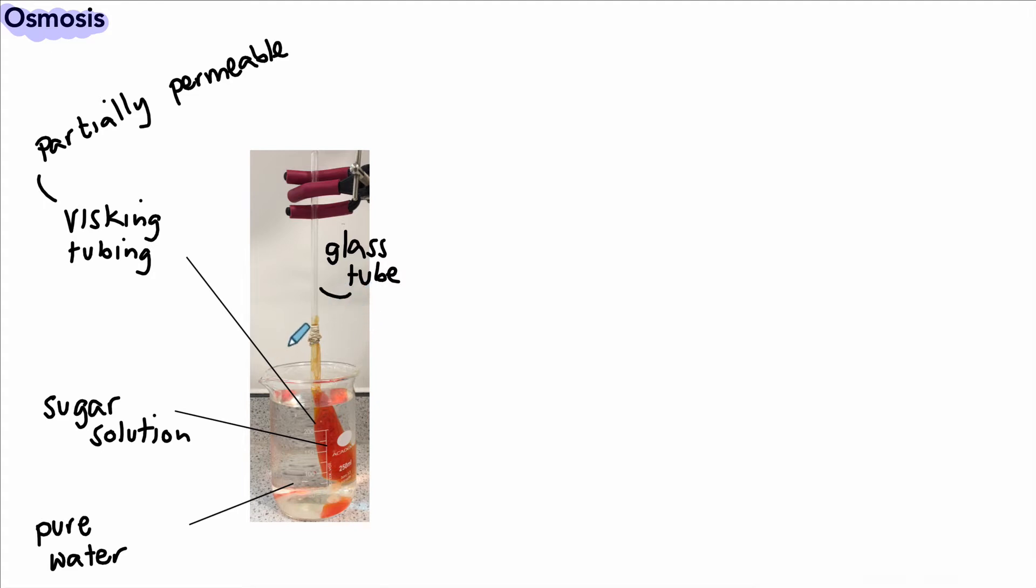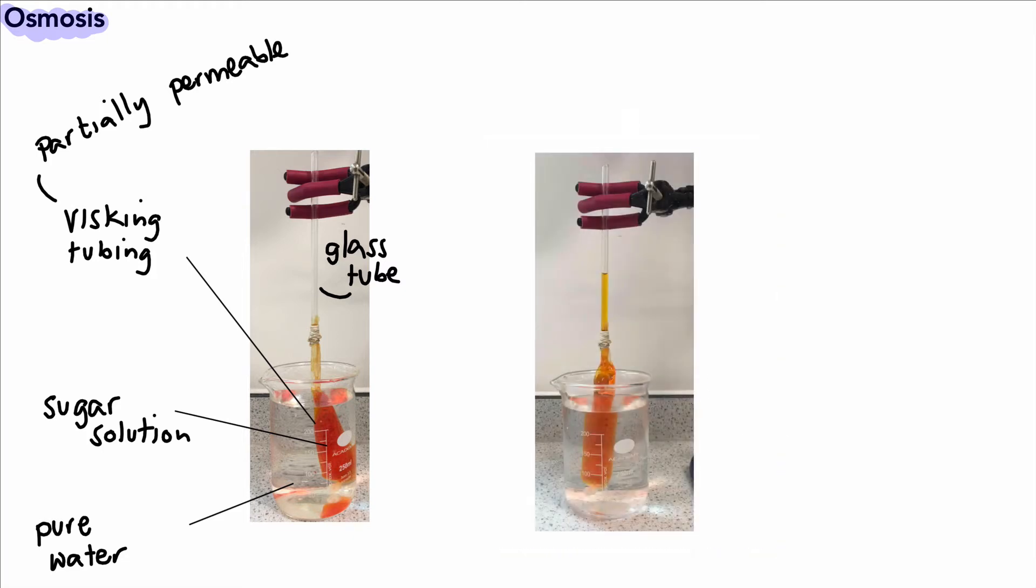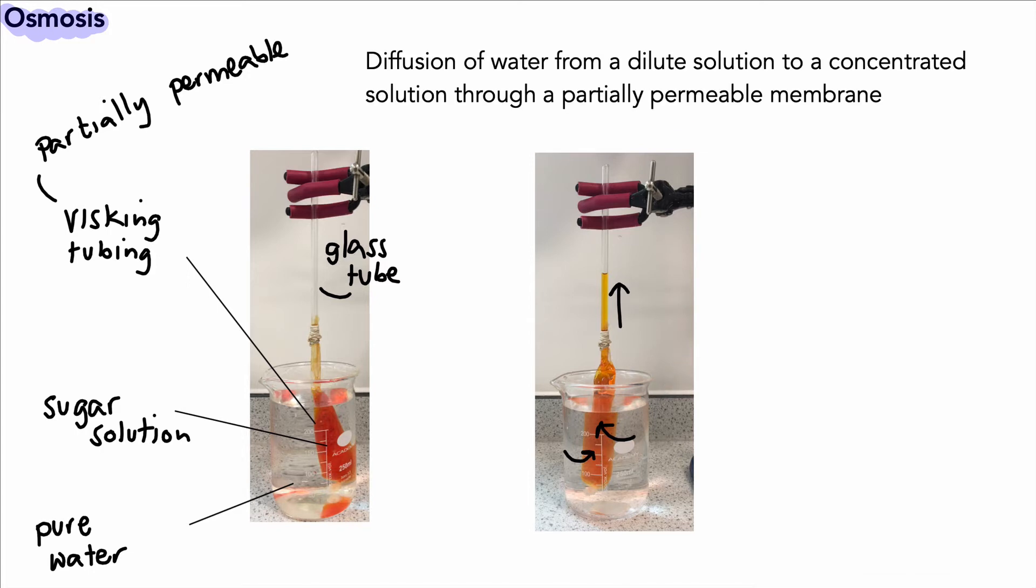It's connected by some very tightly wound elastic band. We can leave this for a couple of hours and see what happens. And there we go. What we notice is that the visking tubing has swollen, and not only has it swollen, but the sugar solution has moved upwards up the glass tube.